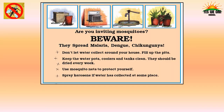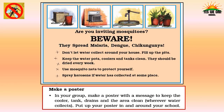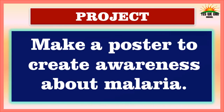There is a poster on malaria to create awareness. Important points include: Are you inviting mosquitoes? Beware — they spread malaria, dengue, chikungunya. Don't let water collect around your house. Fill up the pits. Keep water pots, coolers and tanks clean and dry every week. Use mosquito nets. Spray kerosene if water has collected somewhere. Pictures of tanks, coolers and pits are shown because these are places where mosquitoes can breed if waterlogged or not cleaned regularly. Make a poster with a message to keep cooler tanks, drains and the area clean wherever water collects, and put it up in and around your school.